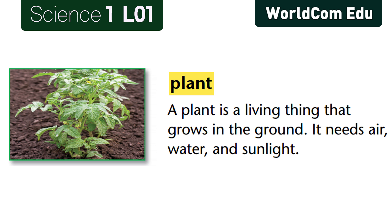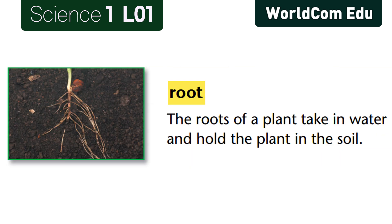American Textbook Reading, Grade One Science, Book One — Lesson One: Parts of Plants. Plant: A plant is a living thing that grows in the ground. It needs air, water, and sunlight. Root: The roots of a plant take in water and hold the plant in the soil.